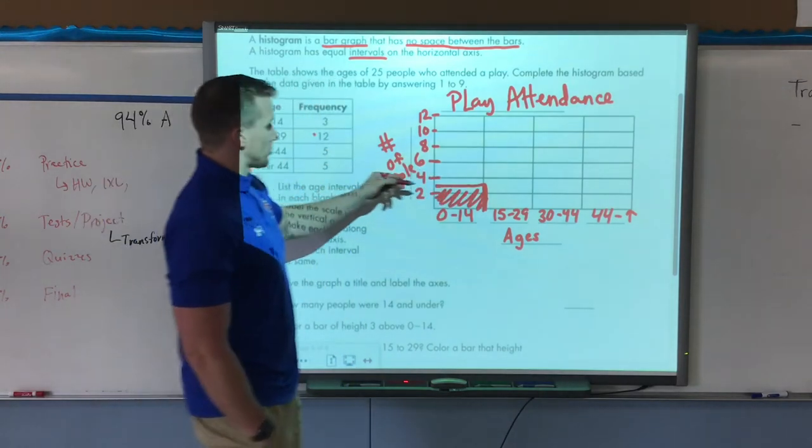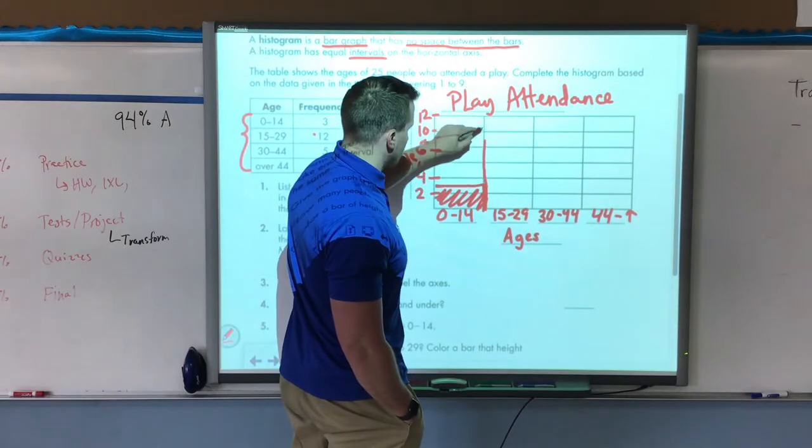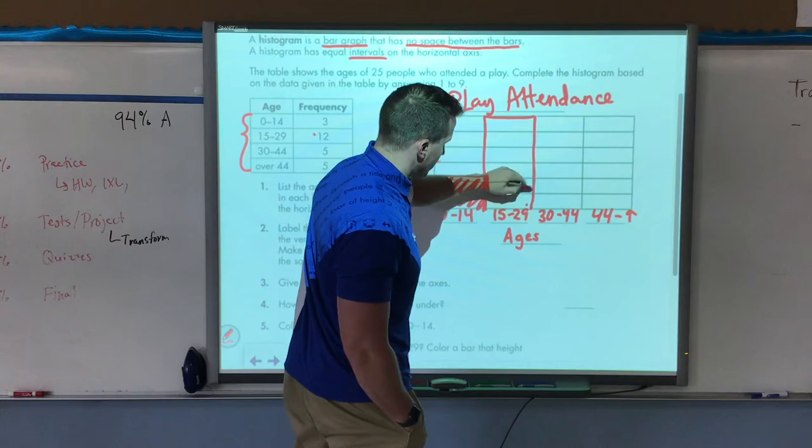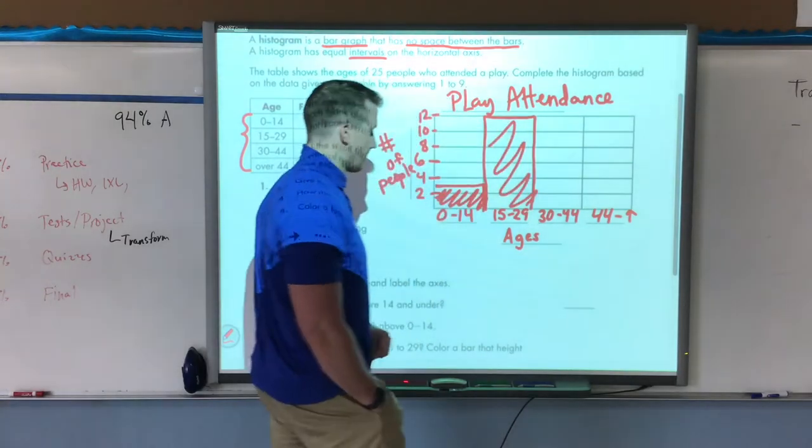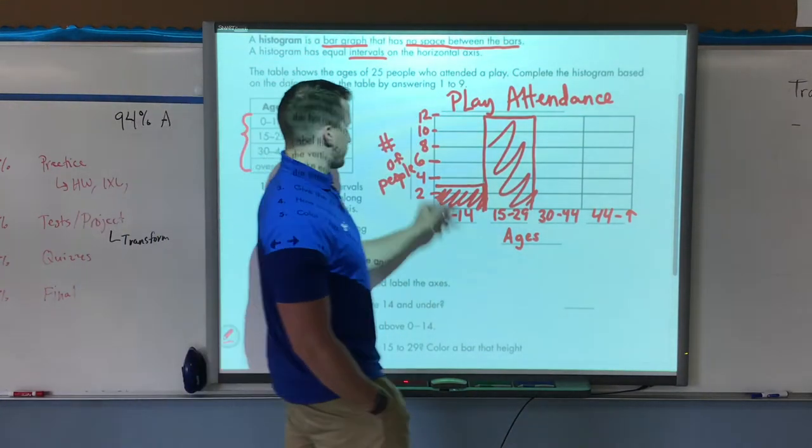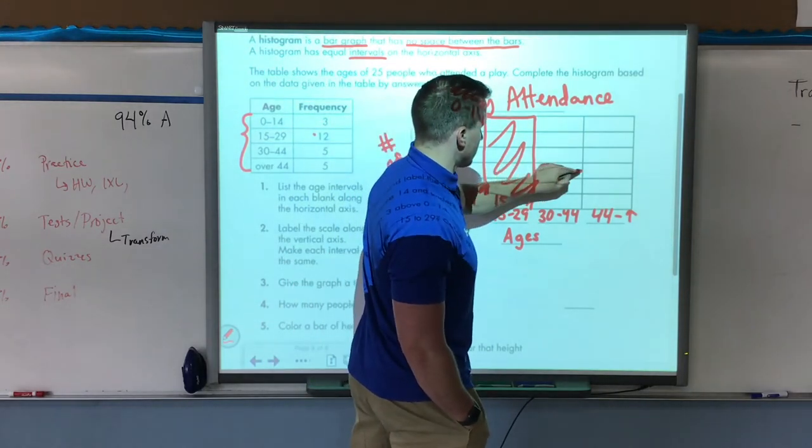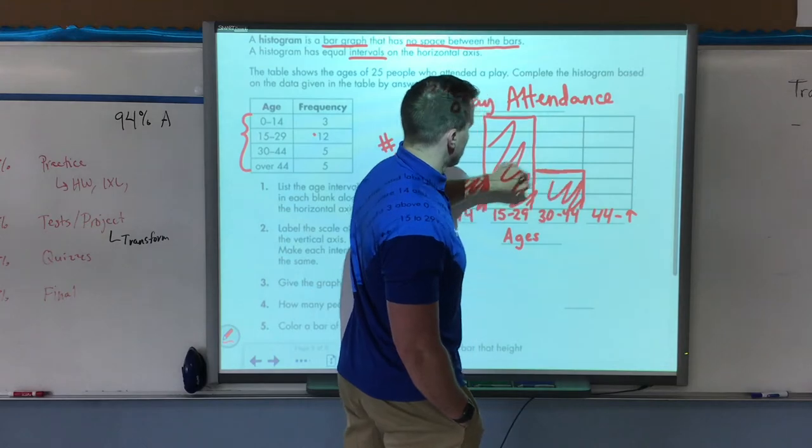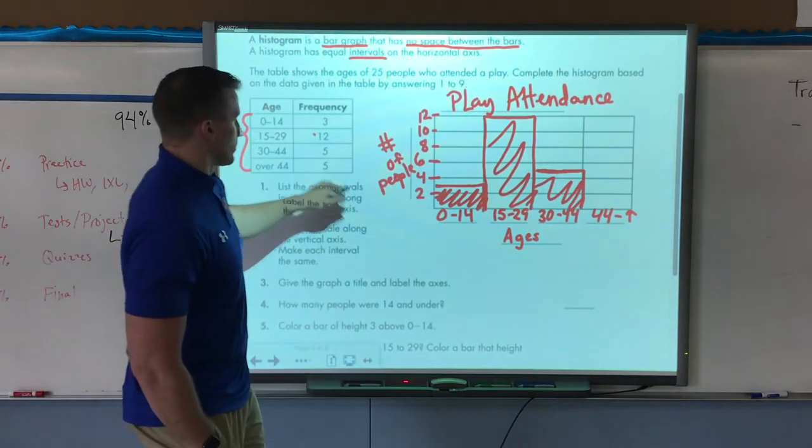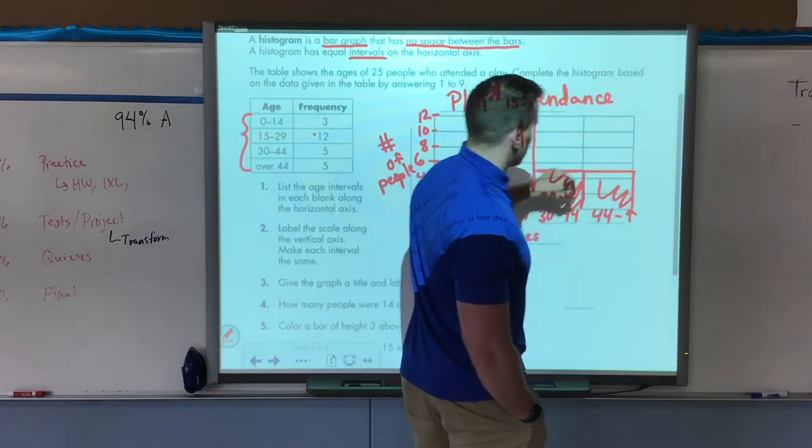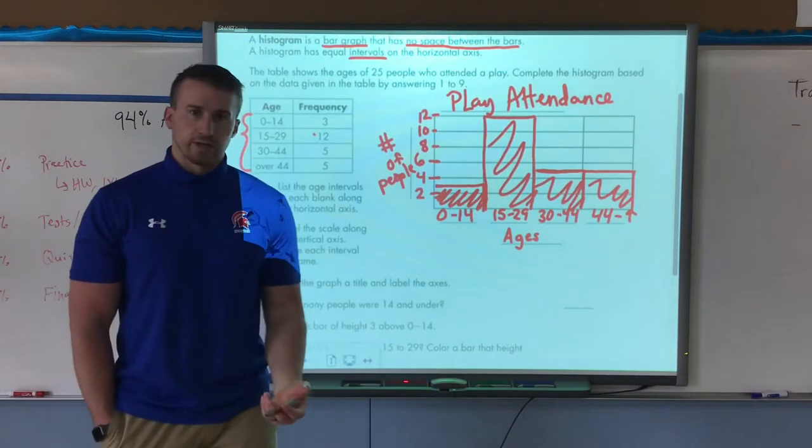Between 15 and 29 was 12. So again, notice how I'm connecting it all because there's no spaces. Now we fill that in. From 30 to 44 was five, so that's in between four and six, right in the middle there. And 44 and above was also five, so that would be the exact same line here. We can color it in if we would like to.